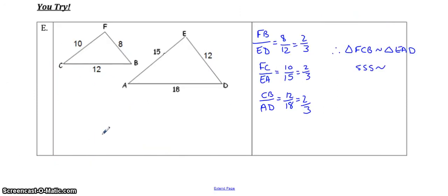Welcome back. For example E, you can see that you've been given all three sides in both triangles, so that should be telling you that it's the side-side-side similarity. That means you have to get the ratio of all three sides and show that the ratios are equal. Make sure you've got the letters going the right way — starting with the smallest, FB goes with the smallest over here, ED. Check your answer to question E.